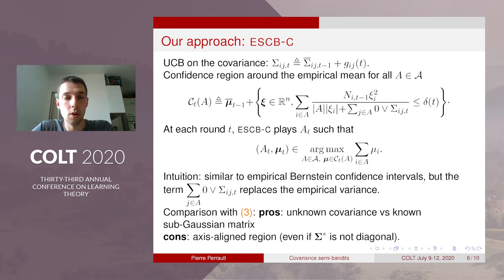So our goal is to build an algorithm that is matching this lower bound. So for this our approach is called Efficient Sampling Combinatorial Bandit with Covariance Estimates. So first we build a UCB on the covariance and then we use this UCB to build a confidence region around the empirical mean.